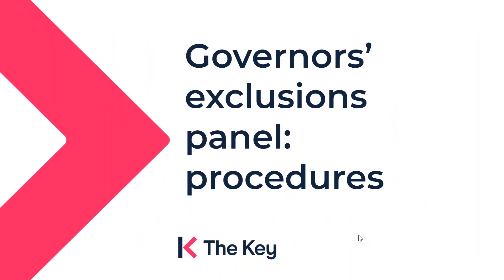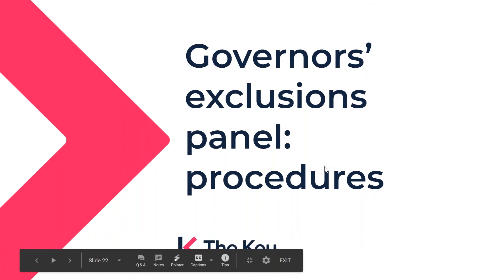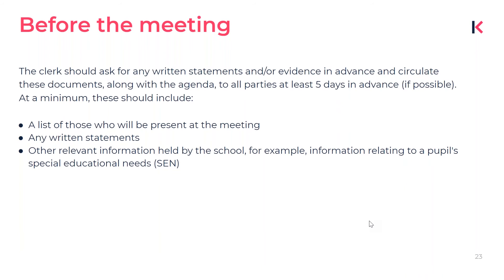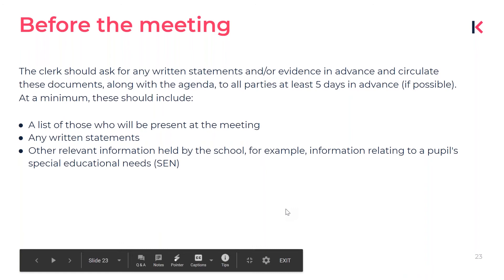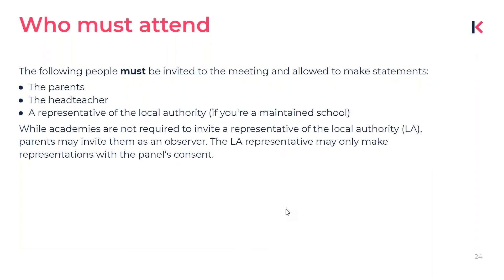Now we're going to talk about procedures — a brief overview of how the governor's exclusion panel works. The clerk will collect any needed documents and evidence before the meeting and make sure all parties receive copies. Certain people must be invited to the meeting: the parent, the headteacher, and a representative of the local authority if you're in a maintained school. In academies, you're not required to have an LA representative, but parents may invite them as an observer.